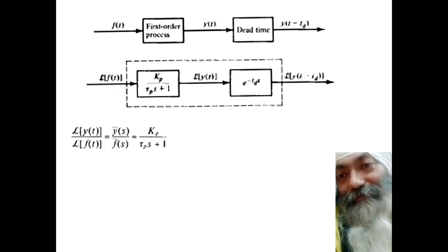So this is how we move around. If the transfer function of first-order system is Kp upon tau_p s plus 1 and the transfer function of dead time is e to the power minus td s, so the final transfer function along with the transport delay will be given by—as these are connected in series—this will be multiplication of the two.